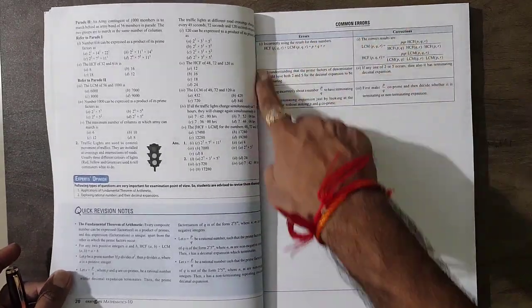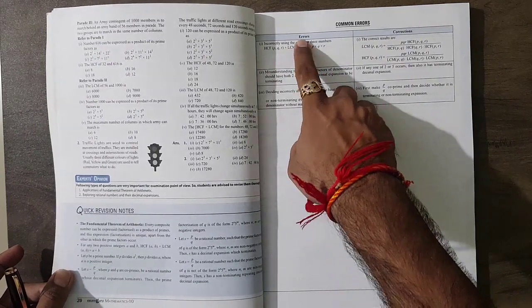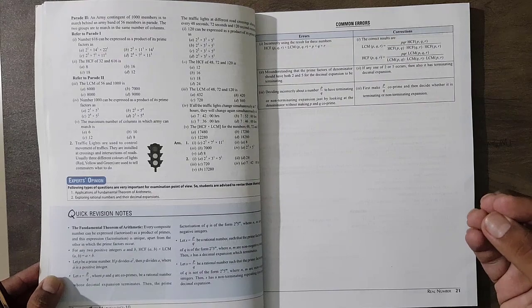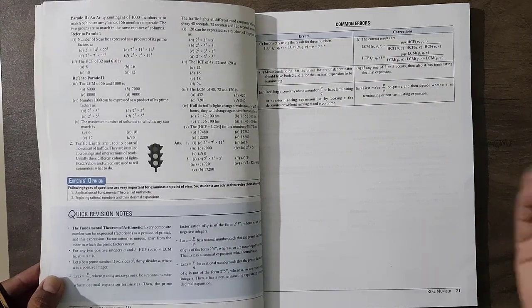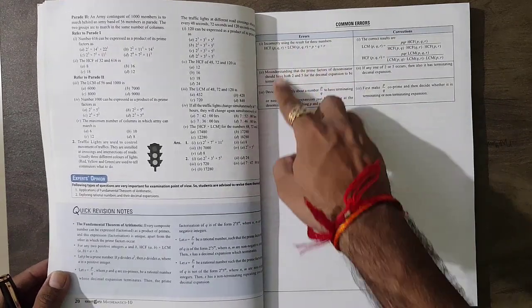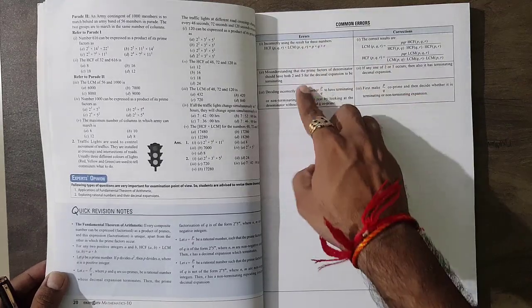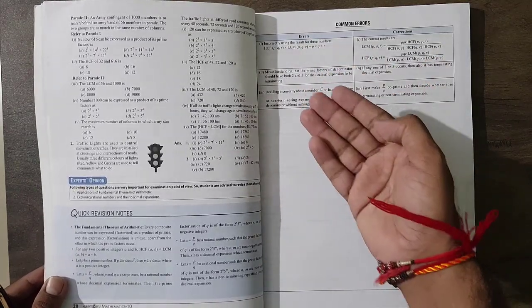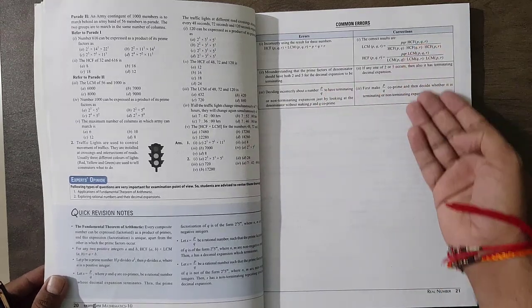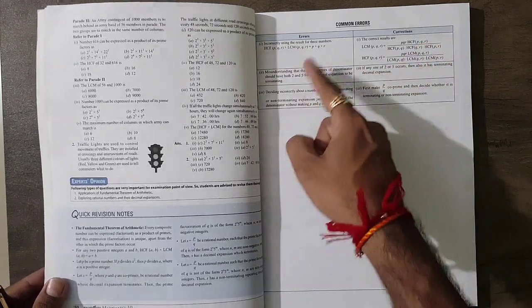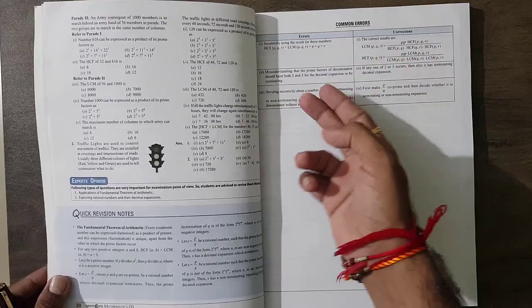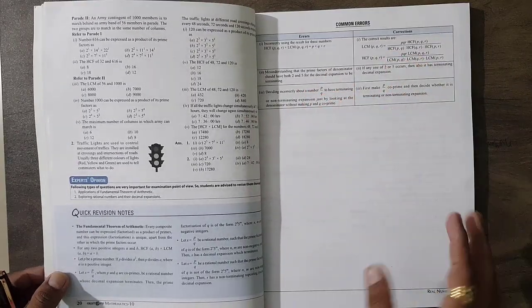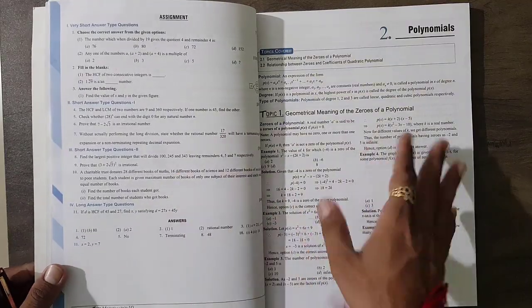The second thing which I like more is this error and correction section. Generally students are making small errors, so here they tell us which type of small errors students are making. I find this is the same type of error generally students are making, and they try to give you this so you will not do these types of errors in examination. Please go with this perfectly - common errors that students are making.